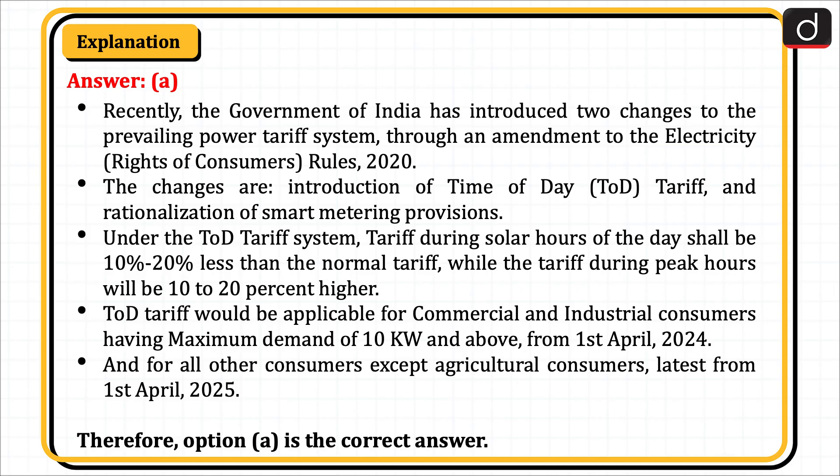Recently, the Government of India introduced two changes to the prevailing power tariff system through an amendment to the Electricity Rights of Consumers Rules 2020. The changes are: introduction of Time of Day tariff and rationalization of smart metering provisions. Under the TOD tariff system, tariff during solar hours of the day shall be 10% to 20% less than the normal tariff, while the tariff during peak hours will be 10% to 20% higher.